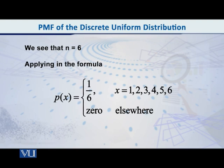So therefore n is equal to 6. So now you put it in the formula. What do you get? You get p of x is equal to 1 by 6, where x is equal to 1, 2, 3, 4, 5, 6, and p of x is equal to 0 elsewhere. So this is the simple case.